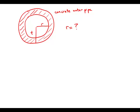Statement number one tells us the ratio of t minus r to r is 0.15, and t minus r is equal to 0.3. So what we have here are two equations for two unknowns.